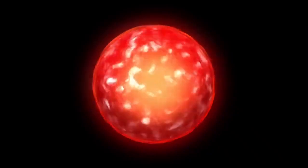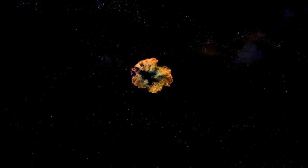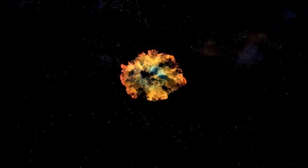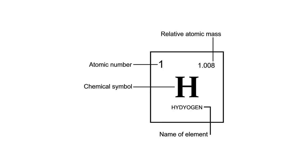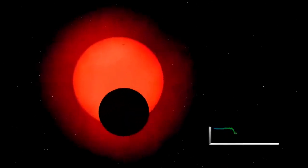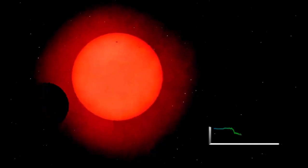In the case of Betelgeuse, a red supergiant nearing the end of its life cycle, this balance has become increasingly unstable. As the star depletes its core hydrogen fuel, the nuclear fusion processes that sustain it undergo significant changes. When hydrogen fusion slows in the core, radiation pressure decreases, causing the gravitational pull to momentarily gain the upper hand. This results in the contraction of the star's outer layers.